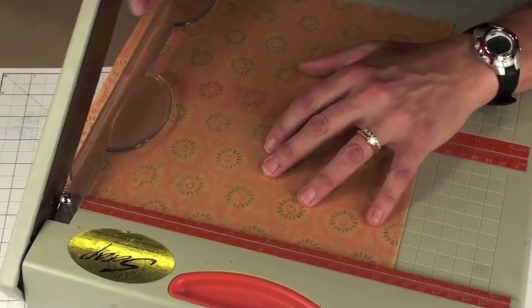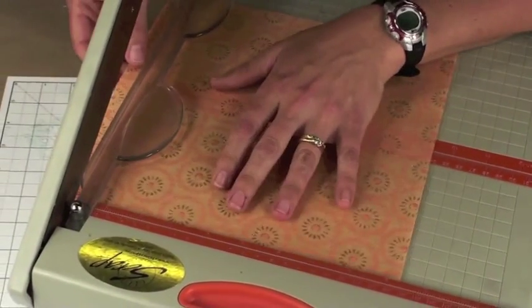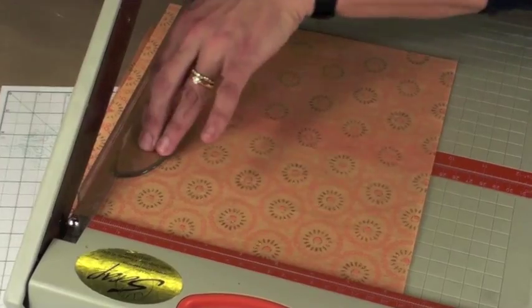So I'll take a sheet of this gorgeous handmade woven print from Club Scrap's Hope's collection. It was a goodie in the kit and I'll trim that down to nine and a half by nine and a half.